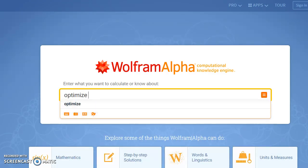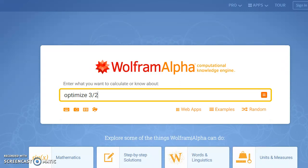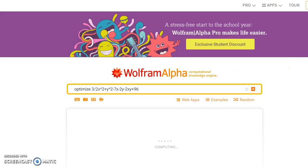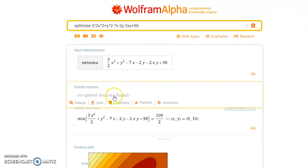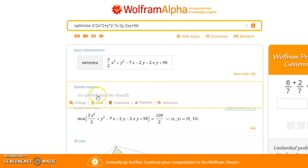So in Wolfram Alpha, we would want to optimize our given function L(x,y), and then interpret our results. It makes sense that we would find no global maximum here, because what we're looking to do is actually minimize this function.